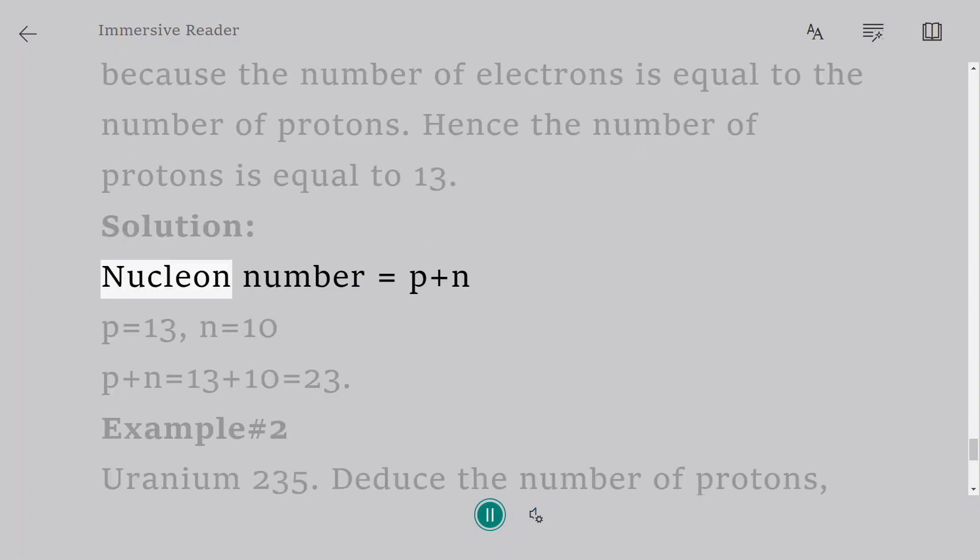Solution: Nucleon number equals P plus N. P equals 13, N equals 10. P plus N equals 13 plus 10 equals 23.